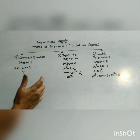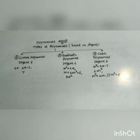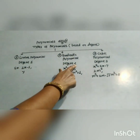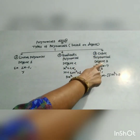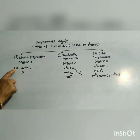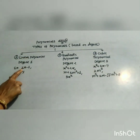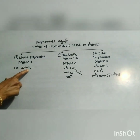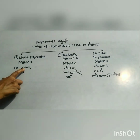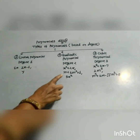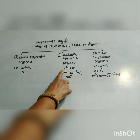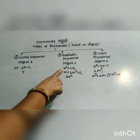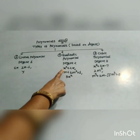Linear polynomials have degree 1, quadratic polynomials have degree 2, and cubic polynomials have degree 3. For example, the linear polynomial 2x minus 1 has degree 1 because the power of x is 1. For the quadratic polynomial x squared plus 2x, the highest power of the variable is 2.